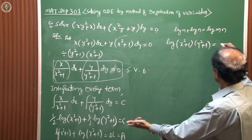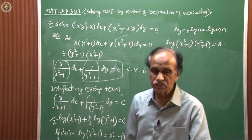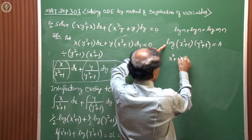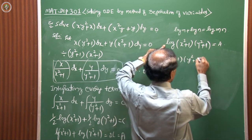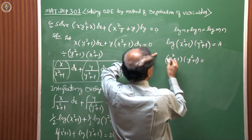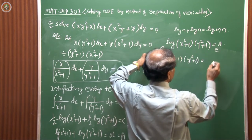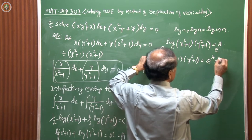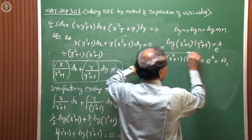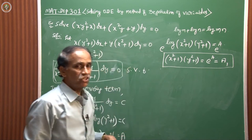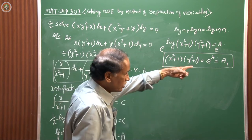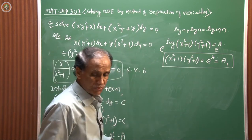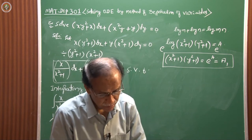So log[(x²+1)(y²+1)] = A, where A is a constant. Raising both sides as exponentials gives (x²+1)(y²+1) = e^A = A₁. This is the final general solution. Since no condition is given, the constant A₁ remains arbitrary. If a condition had been given, we would have calculated the particular value of A₁.